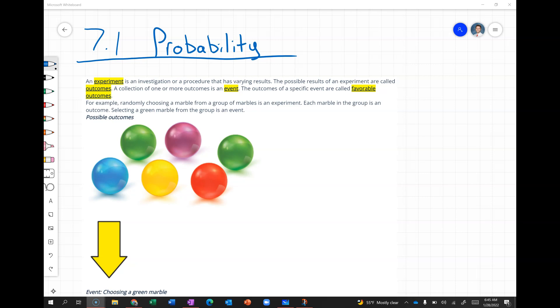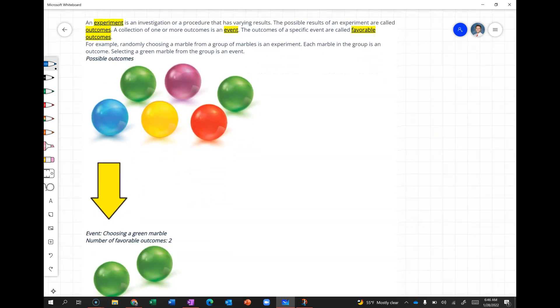Let's look at this example with marbles. You've got six marbles here. Randomly choosing a marble from this group would be an experiment. Each marble itself is an outcome - blue, green, yellow, purple, red, and another green. Those are the six outcomes. If we said, what is the probability of choosing a green marble, that would be our favorable outcome. There are two green marbles, so the number of favorable outcomes would be two.